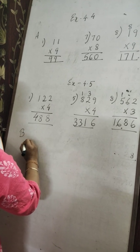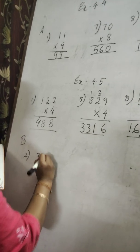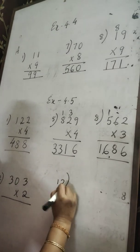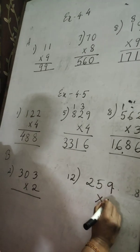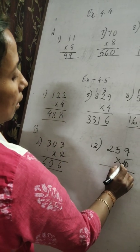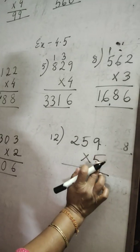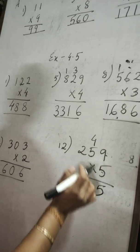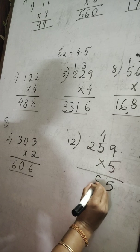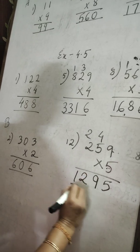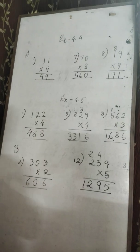2 threes are 6. 2 threes are 6, 2 zeros are 0, 2 threes are 6. Now multiply 5 with the three-digit number: first multiply with the ones place — 5 nines are 45, carry 4. 5 fives are 25 plus 4 is 29, carry 2. 5 twos are 10 plus 2 is 12. This is the answer we got.